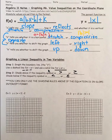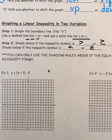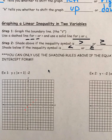So if we have y is greater than or equal to the absolute value of x plus 1, minus 2, we know this graph shifts 1 to the left and 2 down. So I'm going to place the vertex 1 left and 2 down. We know our slope is going to be 1, so it's going up 1 over 1 in both directions.